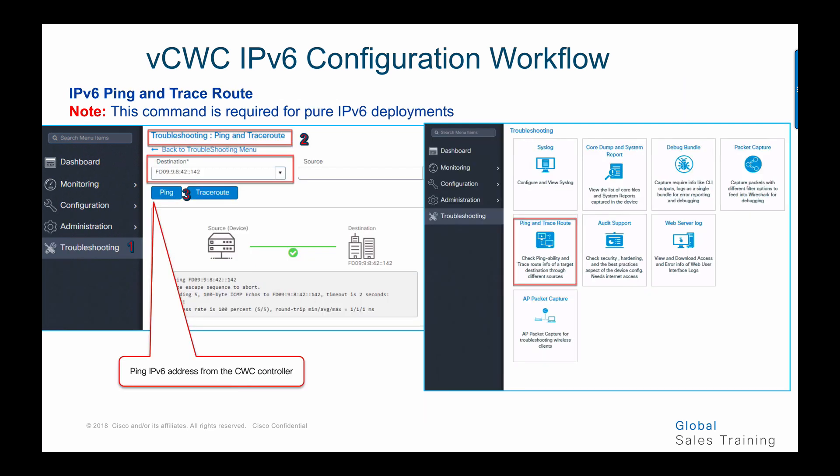Lastly, we show some troubleshooting options for the CWC controller. Under the troubleshooting tab, you can see options for ping, traceroute, audit, support web server logs, debug bundles, packet capture, syslog, and core dump. To perform a simple ping, go to troubleshoot, choose ping and traceroute, then ping an IPv6 address from the CWC controller. A green check mark indicates a successful ping; red indicates unsuccessful. You can similarly run traceroute to show the path from the CWC to a specific IPv6 address.